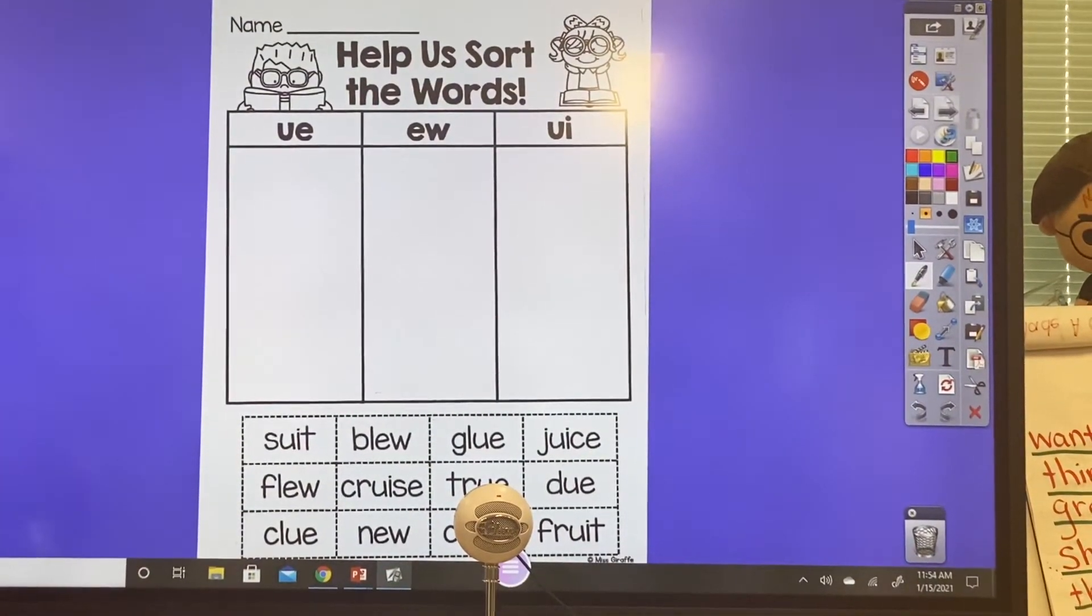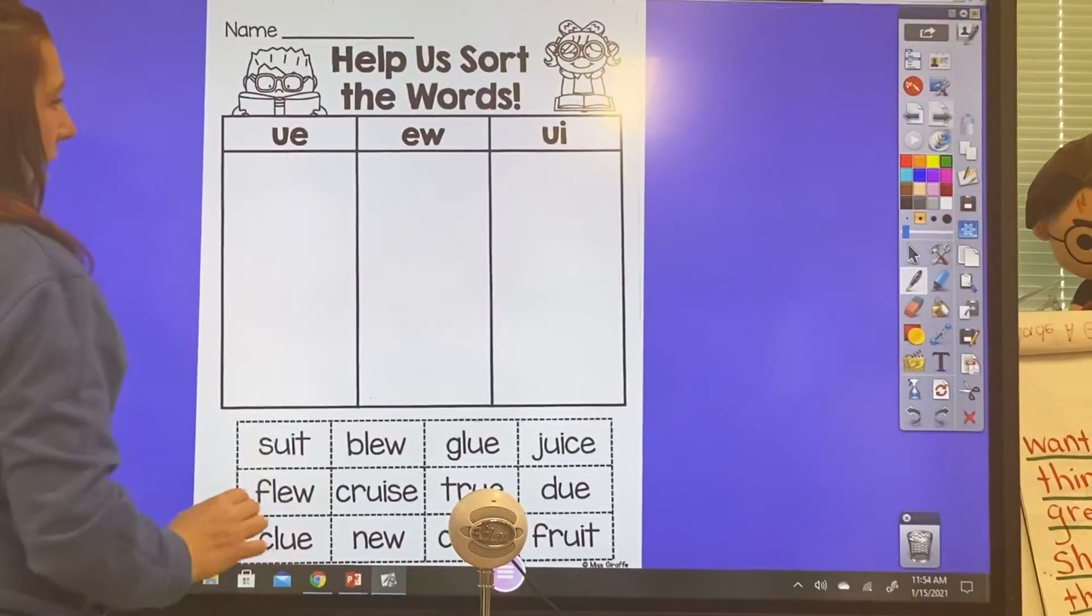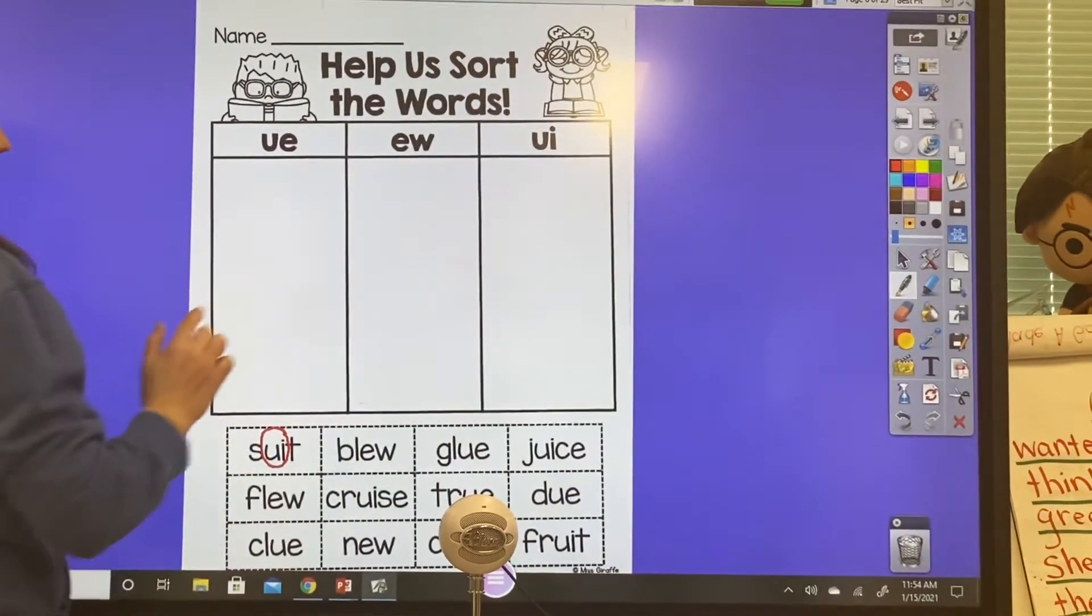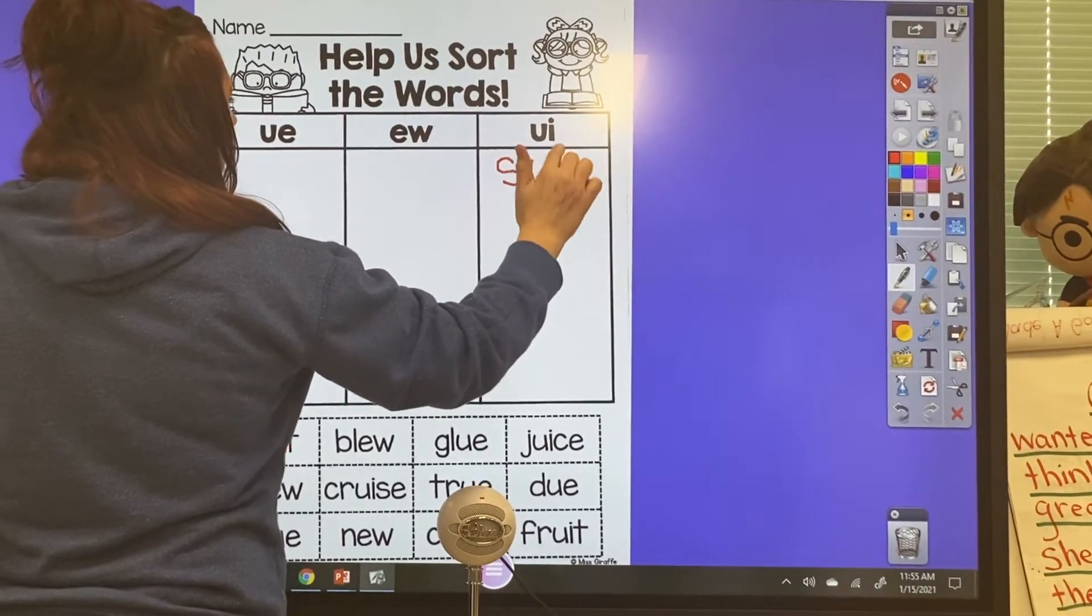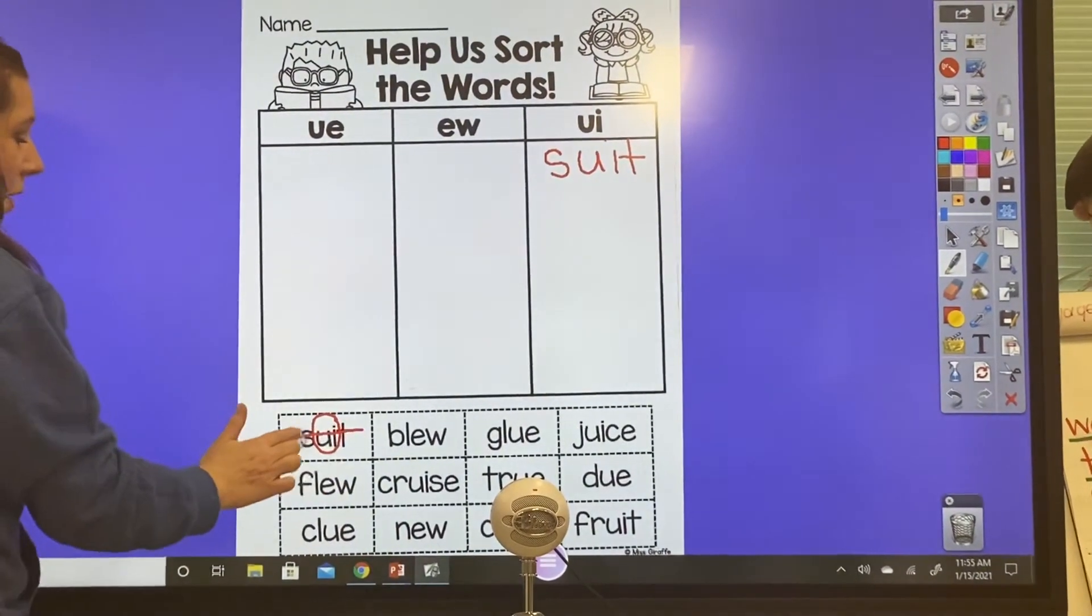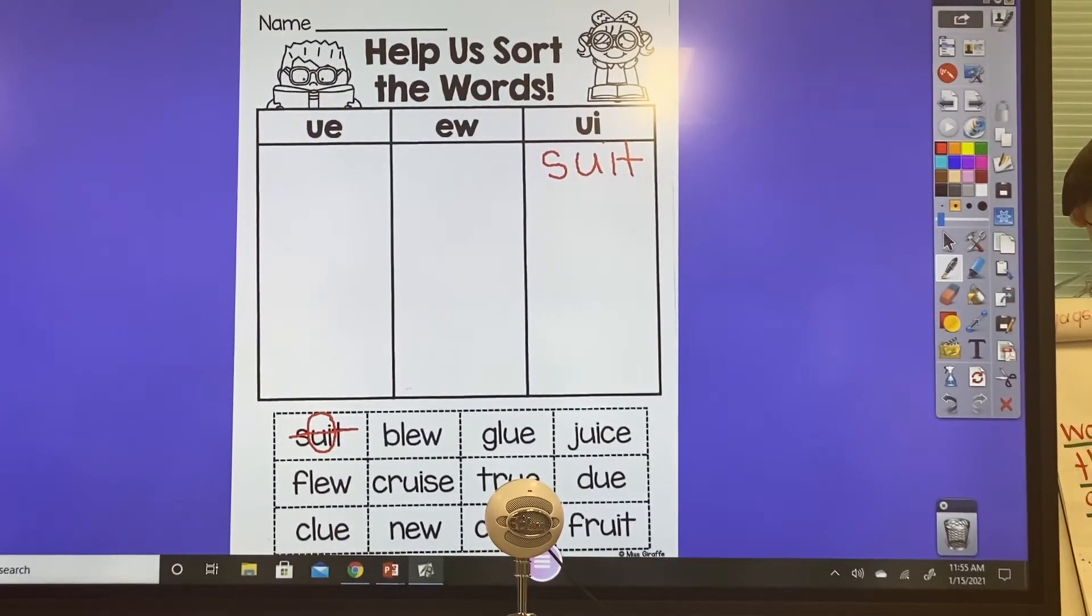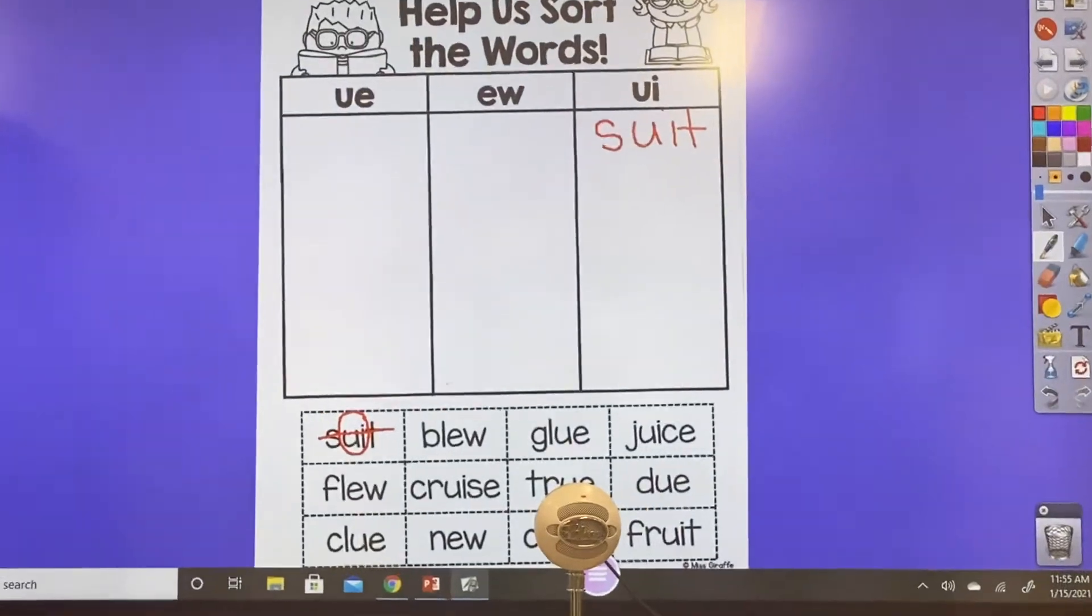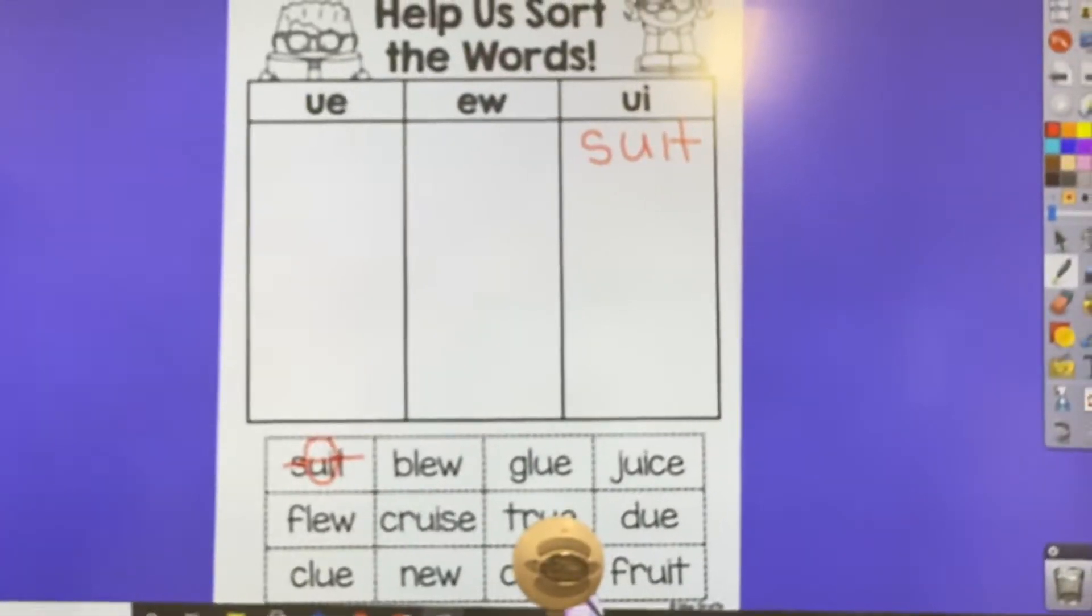So we have suit. I'm going to look and decide, is this a UE word, EU or EW or UI? And if you look in the center of this word, you have UI. So I'm gonna write that right here under the UI column, suit. We've done lots of sorts through this year and you've done it in previous grades. So this should go fairly quickly for you. Should be very easy to sort because you can see the different patterns in the words. So if you have questions about this page, come to your classroom Zooms or get contact with your teacher.